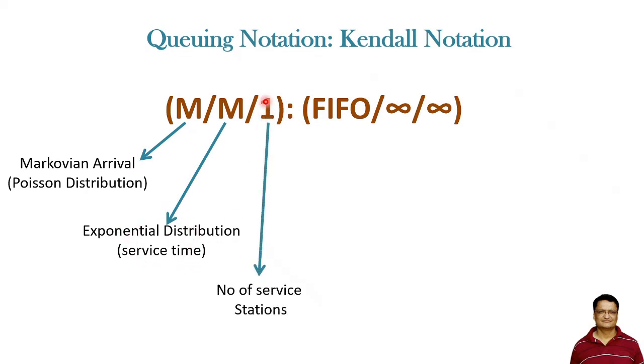The third, the one, is representing the number of service stations. This particular queuing system has only one service station.